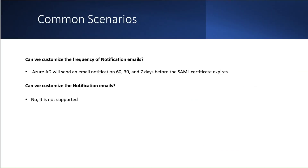Azure AD sends email notifications 60, 30, and 7 days before the SAML certificate expires. However, customizing the frequency of this notification or the default email template are not supported. I hope you found this information helpful and gained a better understanding on how to tackle SAML certificate issues in Azure AD. Thanks for watching.